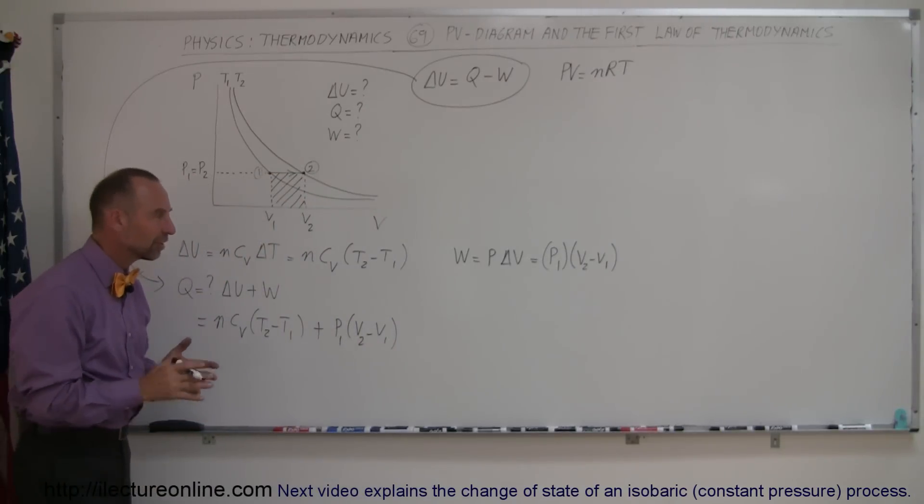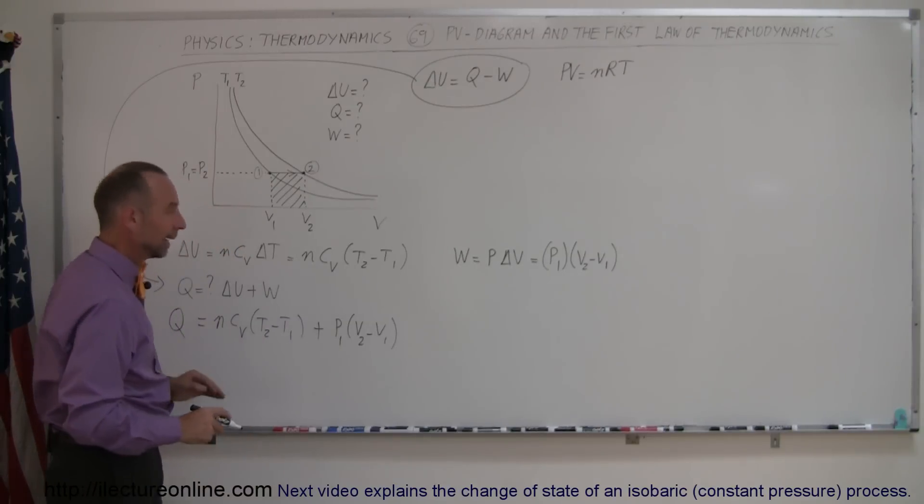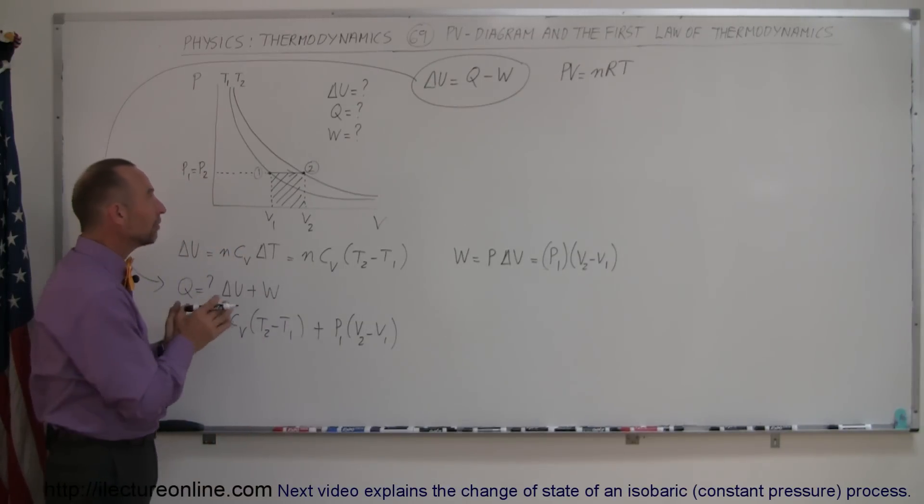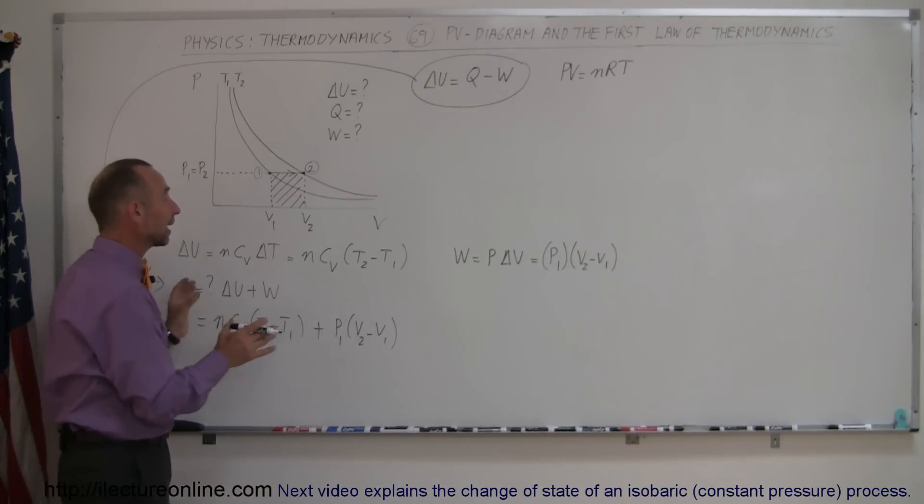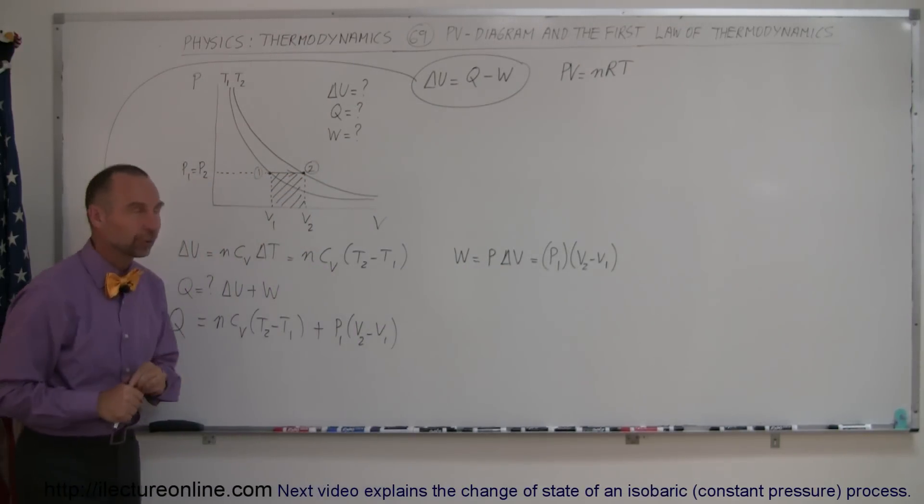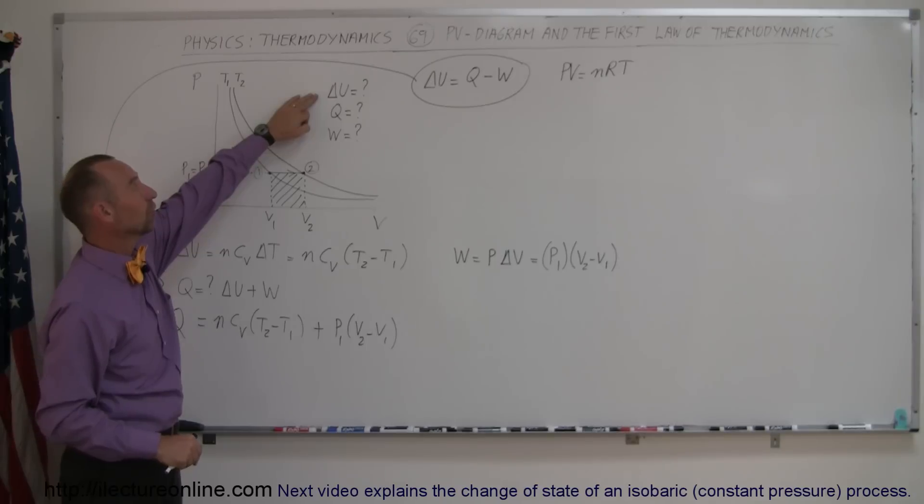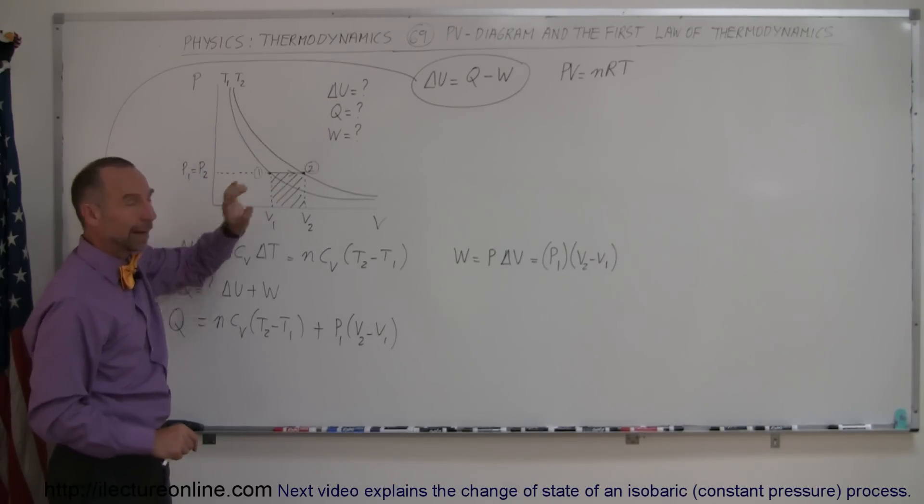So even though we didn't use an example with numbers, you can simply see that there's a very close relationship between delta U, work done, and Q, and sometimes we can find one of the unknowns by simply realizing that I can calculate the other two unknowns and then add them or subtract them together to get the third unknown. So here you can see the nice relationship between the PV diagram and how to use the first law of thermodynamics to find the change in the total energy, the heat added to the gas, and the work done by the gas.